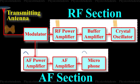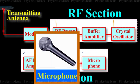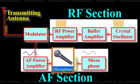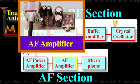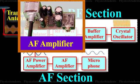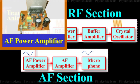The conversion of sound energy into electrical energy is performed by the microphone. The electrical energy available from the microphone is very low. Hence, it is amplified through an amplifier. The output from the AF amplifier, i.e. the audio frequency amplifier, is fed to the audio frequency power amplifier. The output of the AF power amplifier is given to the modulator.